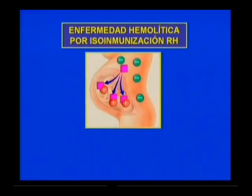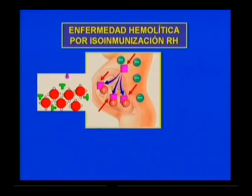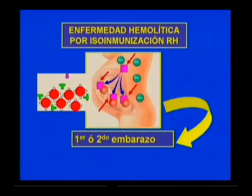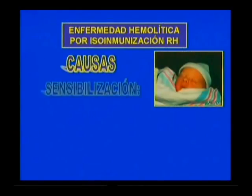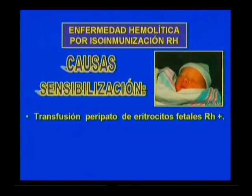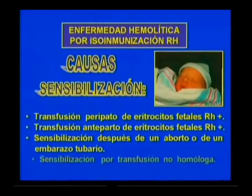La enfermedad hemolítica por isoinmunización RH se produce por la formación de aglutininas anti-D en la sangre materna de una mujer RH negativa, que pasan a través de la placenta a la sangre de un hijo RH positivo. Esto ocurre generalmente después del primer o segundo embarazo con hijos RH positivos, pero puede presentarse también sin hijos previos. Existen otras causas de sensibilización, como la transfusión periparto de eritrocitos fetales RH positivo —la más frecuente—, la transfusión anteparto, la sensibilización después de un aborto o embarazo tubario, y la sensibilización por transfusión no homóloga.